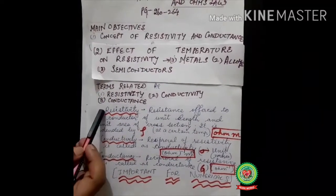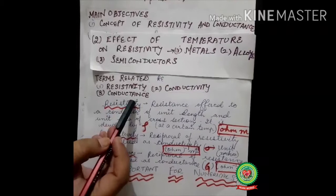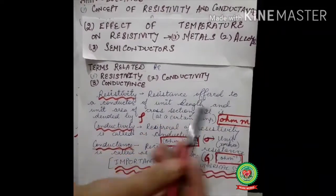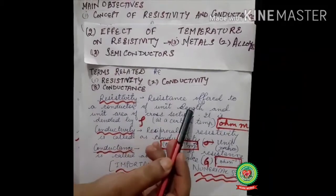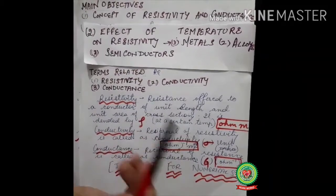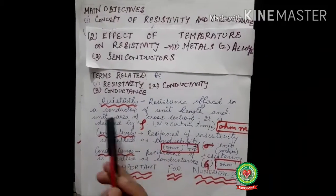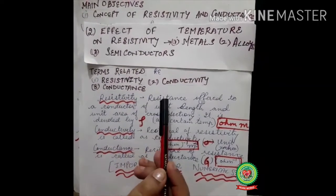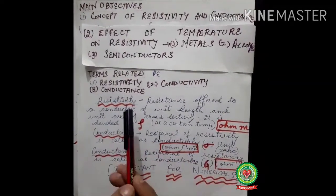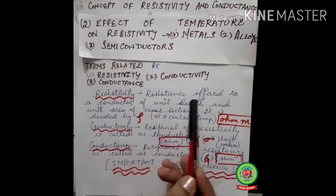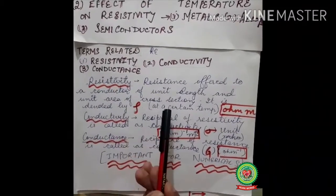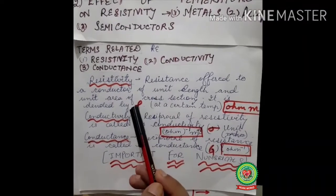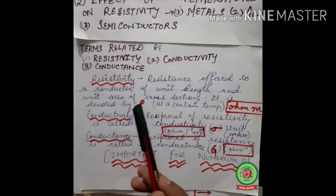Resistivity is basically resistance, but it is the resistance offered to a conductor having unit length and unit area of cross-section — for example, one meter length and one centimeter square area. Resistivity is measured at a constant temperature, because with a change in temperature, resistivity changes.